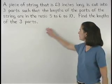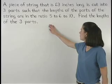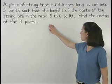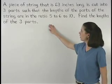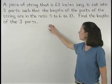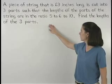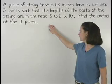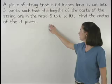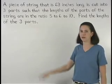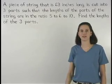A piece of string that is 63 inches long is cut into three parts such that the lengths of the parts of the string are in the ratio 5 to 6 to 10. Find the lengths of the three parts.